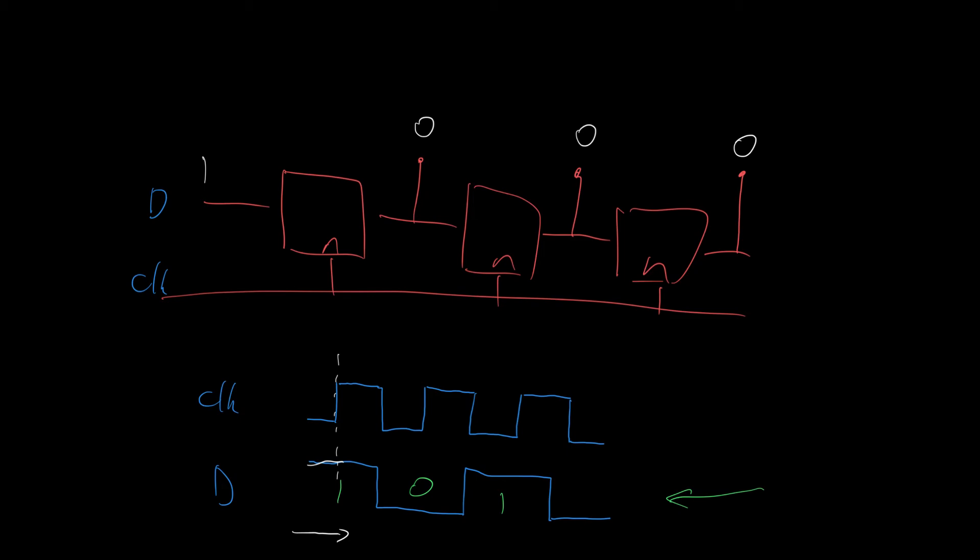That means that this 0 here drops off to be replaced by this 0. This 0 shifts across to here, and this 1 shifts across to here. Which means, after our first rising edge of the clock, our shift registers are now 1, 0, 0.